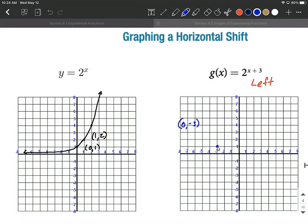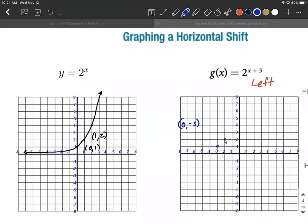List that off to the side here. And then we had a key point at 1, 2. Pick that up, move to the left 1, 2, 3 units. Set it back down. It's going to be at negative 2, 2.